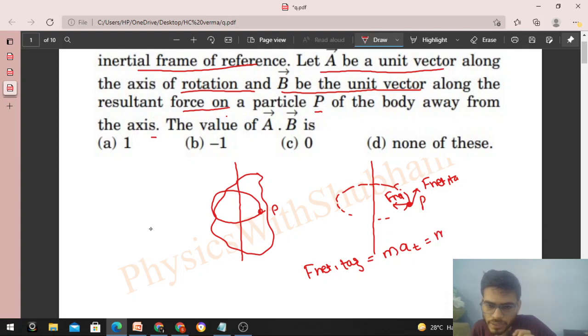If it is uniform circular motion, then speed will be constant, so dv by dt will be zero. Or you can say tangential acceleration is zero for uniform circular motion, so tangential force will be zero.